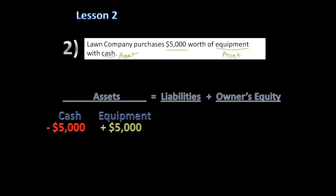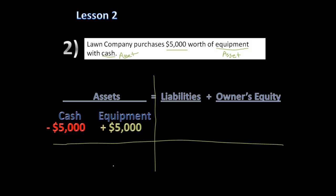Breaking this into left and right sides: on the asset side, minus $5,000 plus $5,000 gives a net zero change. We didn't change liabilities or owner's equity, so there's a zero change on that side too. Both sides net to zero, so the transaction is balanced.